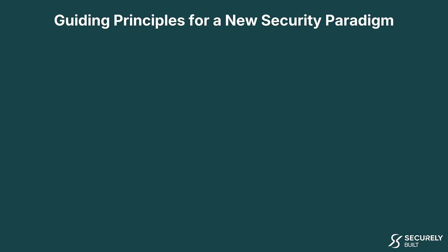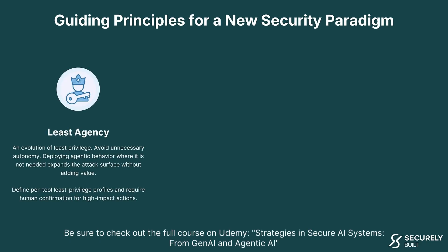Given these new challenges, we need a new security paradigm to protect agentic AI systems. There are three guiding principles. First is the principle of least agency — an evolution of least privilege. We want to avoid unnecessary autonomy, as deploying agentic behavior where it's not needed expands the attack surface without adding value. Define per-tool least privilege profiles and require human confirmation for high-impact actions. Don't give an agent more autonomy than it needs.